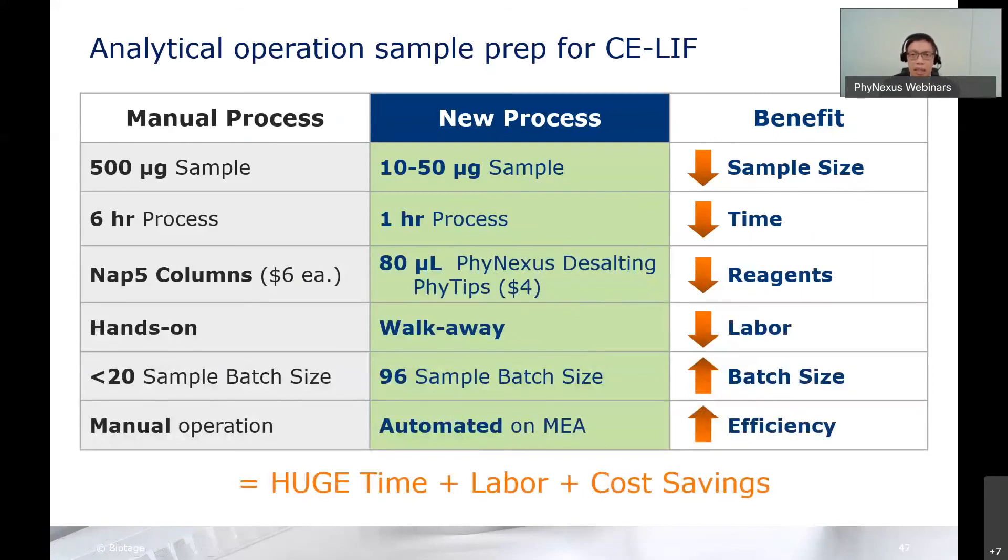This is a real-world example of a CE-LIF assay that we installed for our customer. In the manual process, because we could do smaller volumes, we were able to reduce the sample volume. Reduce the run time from 6 hours to 1 hour. The price is approximately the same based on Nap-5 column and the PhyTip column. But what we get is hands-off automation. We can process up to 96 at a time and have full automation. This is on the MEA; eventually, this was transferred over to a Beckman FX. Lower sample volume, lower run time, smaller amounts of reagents, less labor time, increased batch size, and increased efficiency.